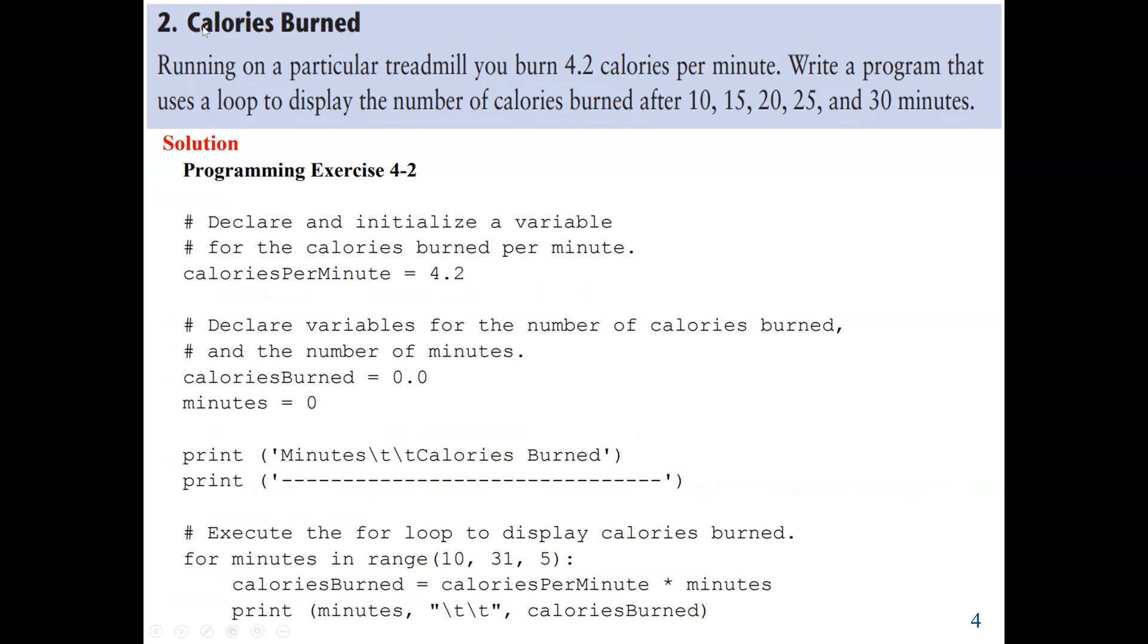So let's look at our second problem. Our second problem is calories burned. So you are running on a particular treadmill. You burn 4.2 calories per minute. Write a program that uses a loop to display the number of calories burned after 10, 15, 20, 25, and 30 minutes. The reason why we are using a loop is because we have to find the calorie for 10, 15, 20, 25, and 30, so five times. So that's why we are using a loop.